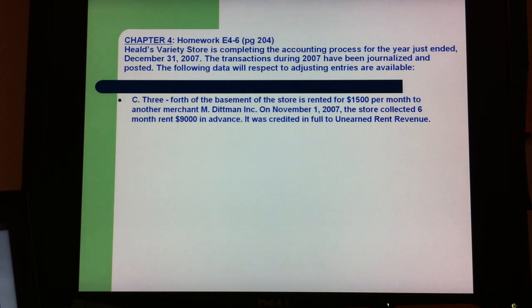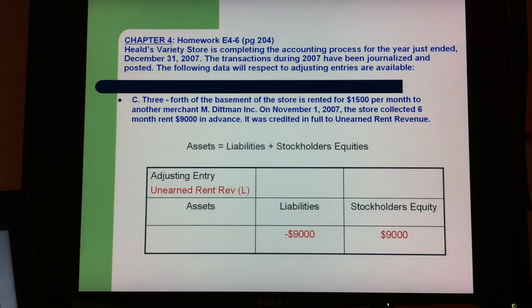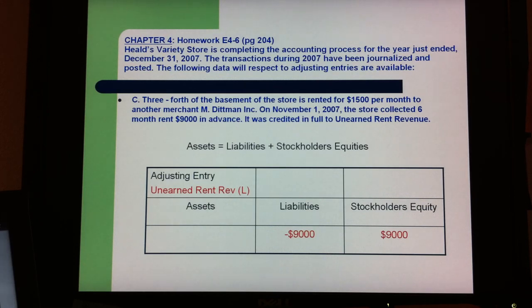Part C is about unearned rent. The unearned rent revenue calculation gives $900 as liabilities and $900 as stockholders' equity.